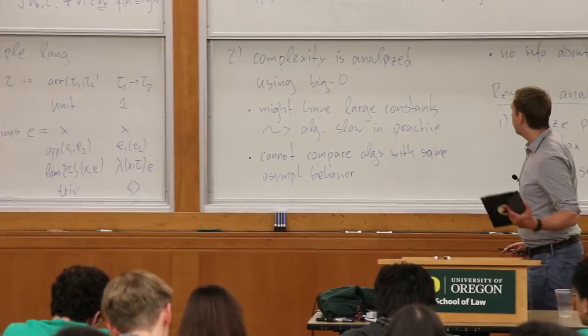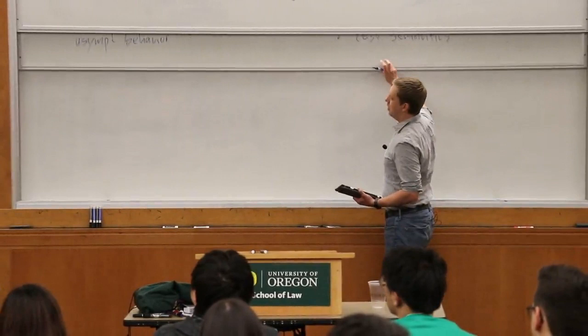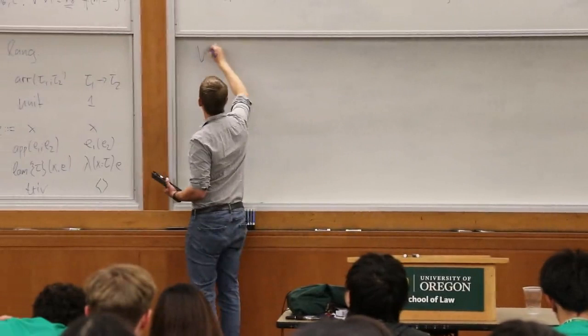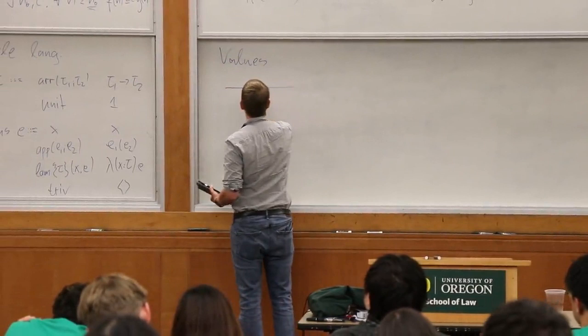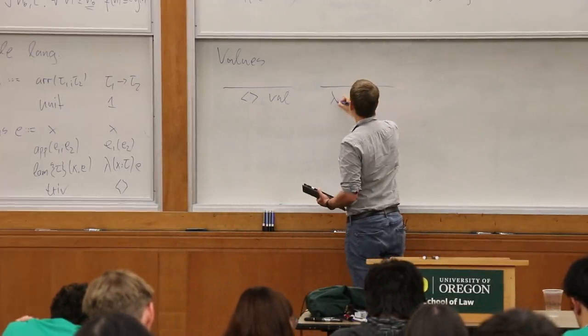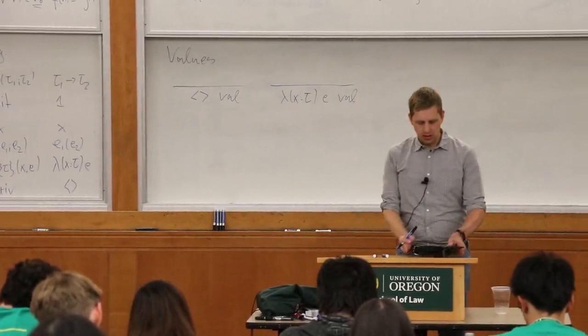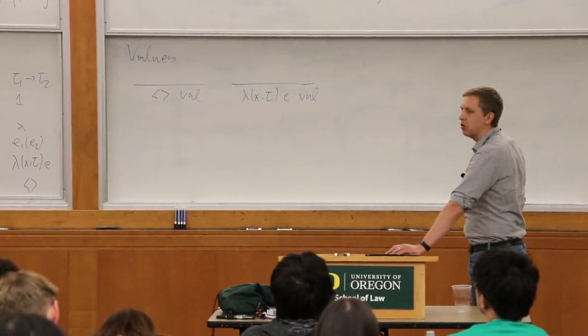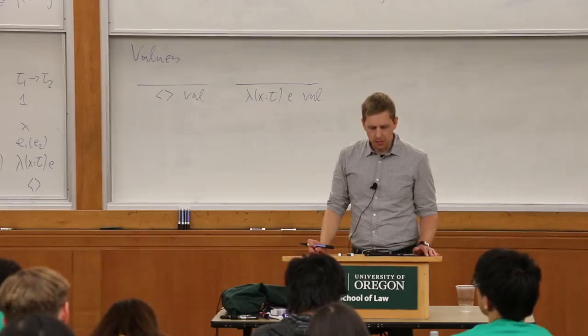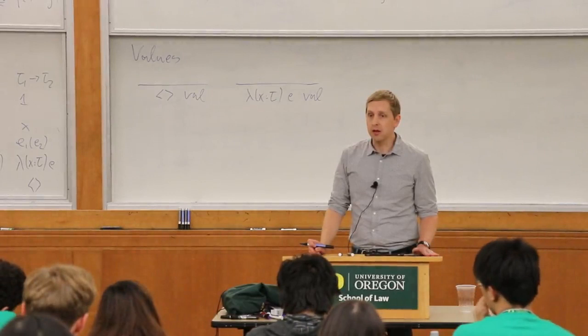When defining a programming language, we always have to say what the values are. Here we have two values: unit is a value, and lambda abstractions are also values. I'm not defining substitution and free variables — I assume you are familiar with those. What we want to do now is define cost semantics for this simple language.